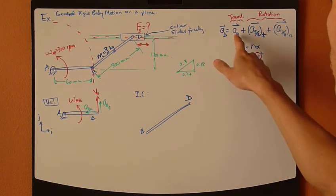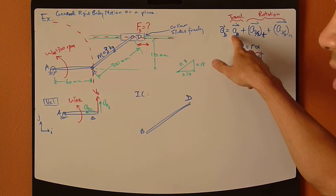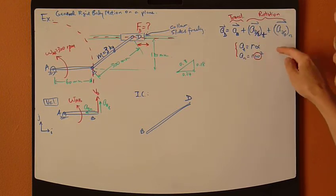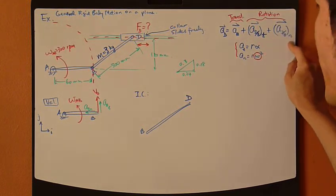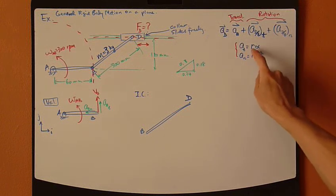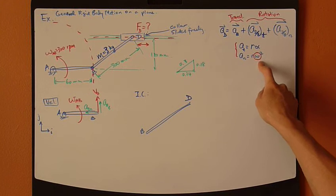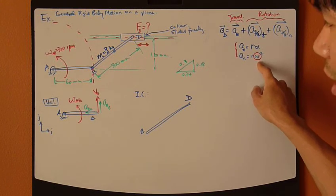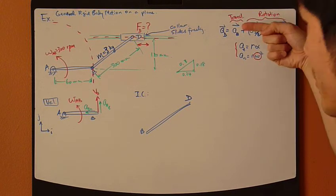So, equal to translation according to acceleration to point B plus the rotational acceleration, which has two components, tangent and normal component. The tangent component equals to R alpha. The normal component equals to R omega square, which involves omega, angular velocity, which means that we need to first find velocity before we can find acceleration.